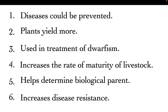For example, when talking about livestock such as chicken, you can get a fully grown chicken in just three to four weeks by altering them genetically. So it increases the rate of maturity in livestock. Number five, it helps to determine biological parents if there is a dispute about who is the real parent of a baby.